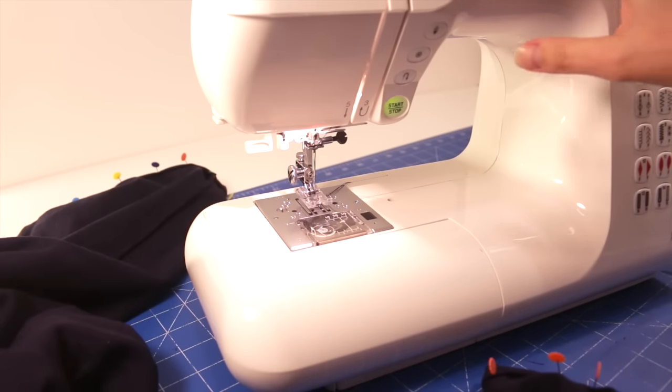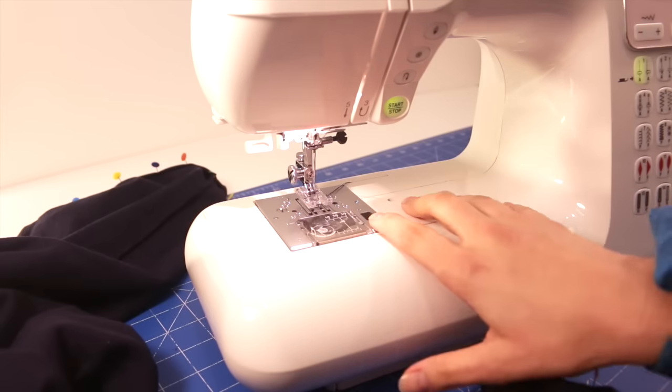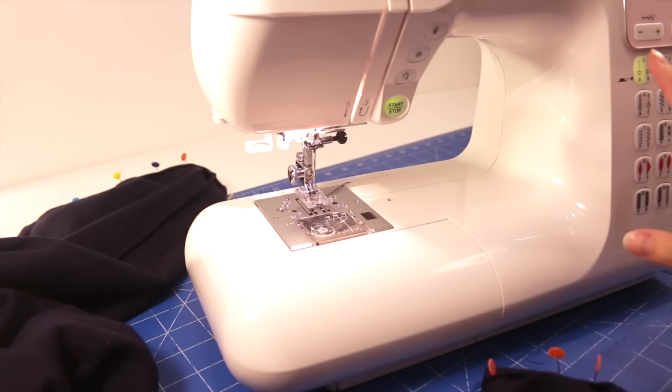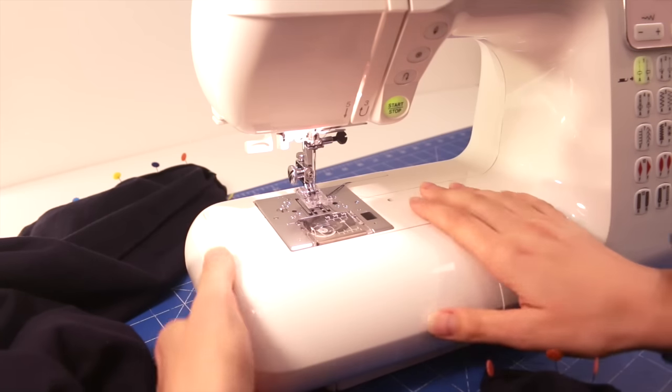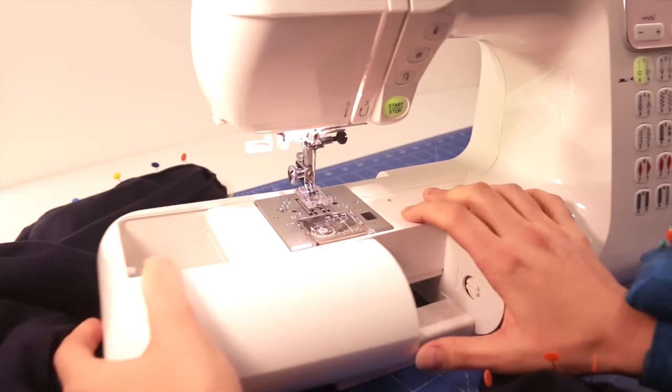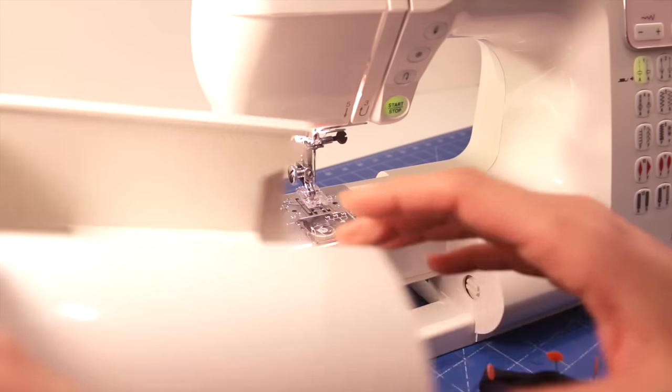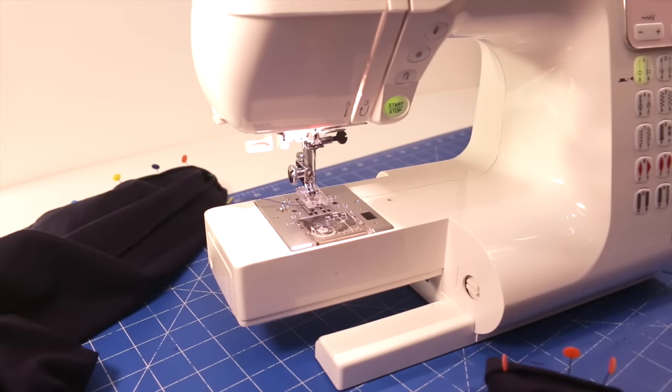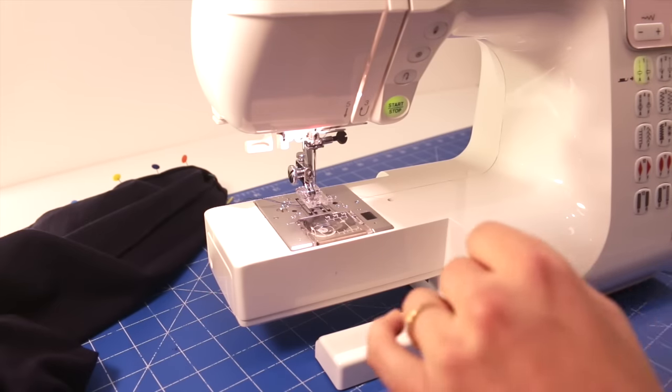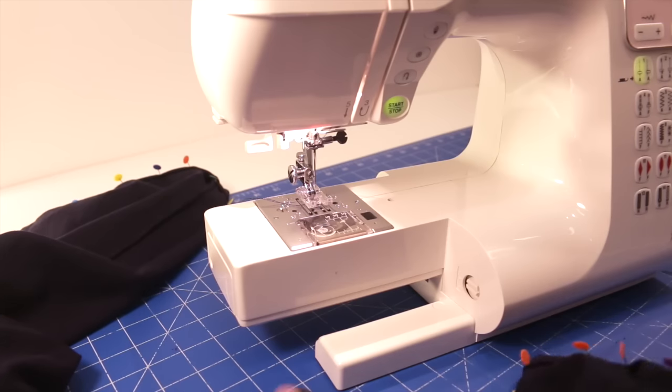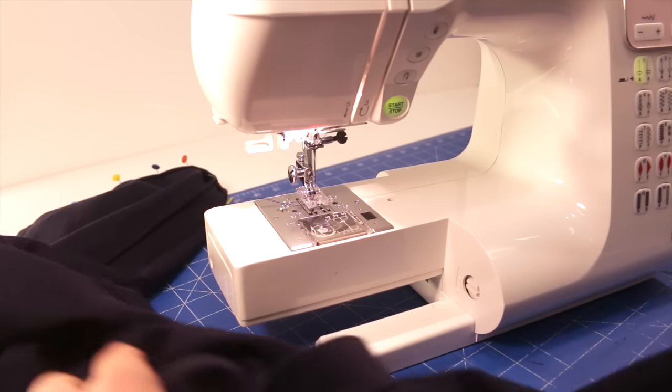I have my machine all set up with my matching thread color for my pants. I have it set on a straight stitch with about a 2.4 stitch length. If you can remove this part of your sewing machine so you can use the free arm feature, then that is awesome, especially when you're sewing smaller pant legs.